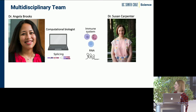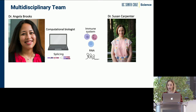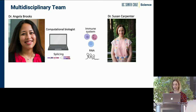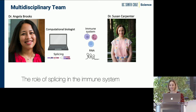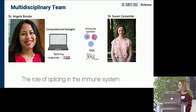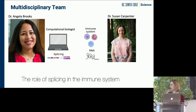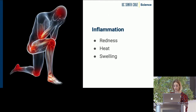I am Susan Carpenter, and my area of interest is the immune system. We're very much interested in understanding the role that RNA plays in controlling our immune system. Myself and Angela both started our labs on the exact same day, and we were very excited to immediately start working together on this project of trying to understand the role of this process known as splicing in our immune system.